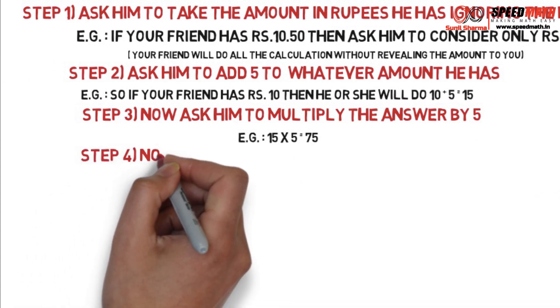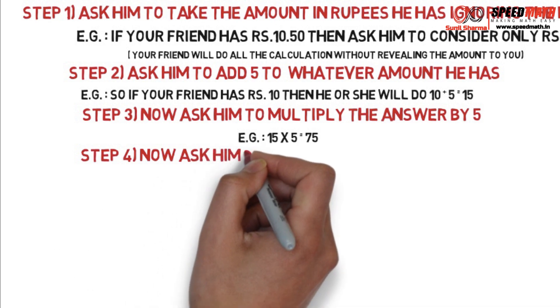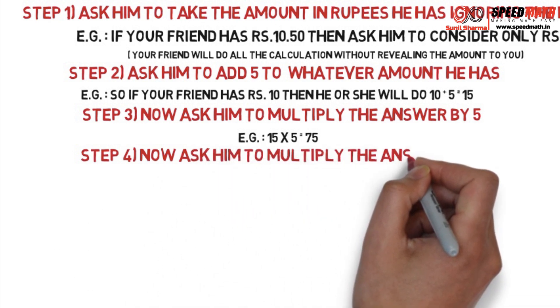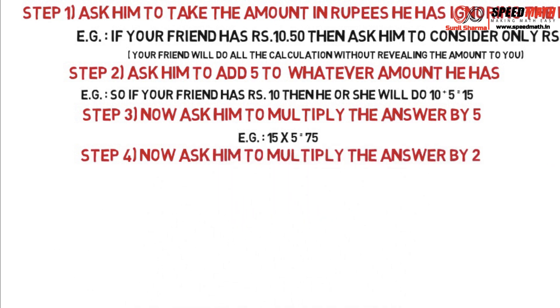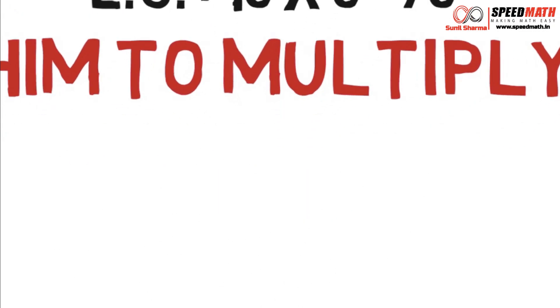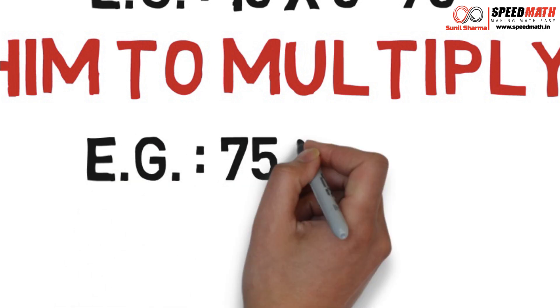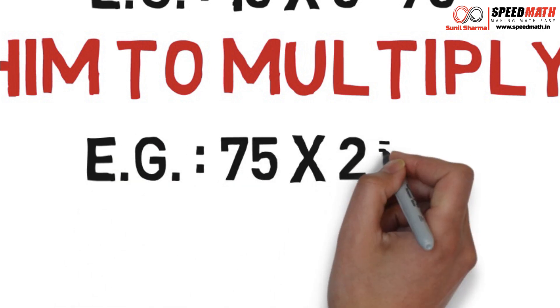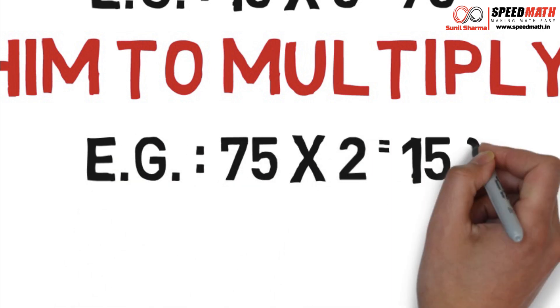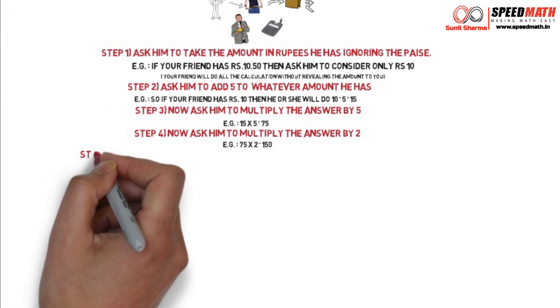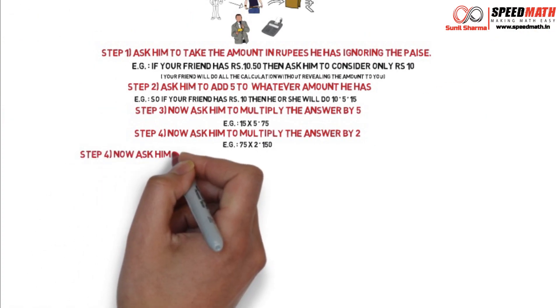Step 4: Now ask him to multiply the answer in the calculator by 2. We got 75, and we are going to multiply it by 2, giving us 150.